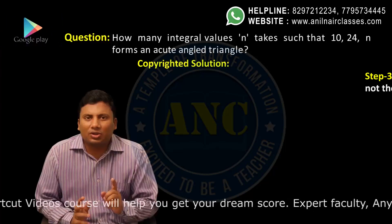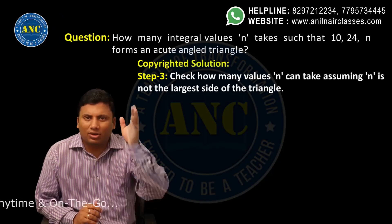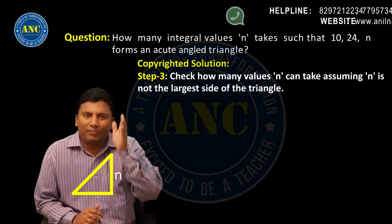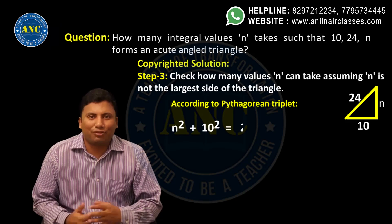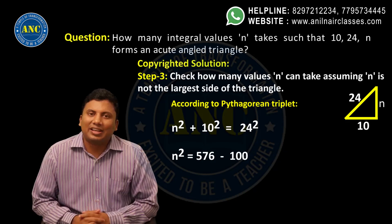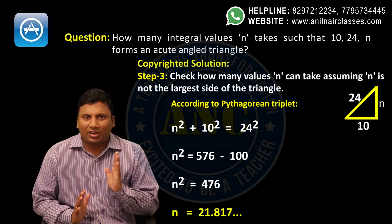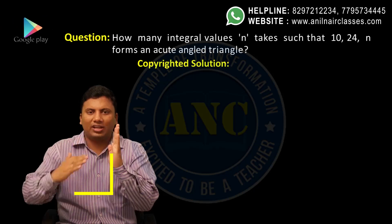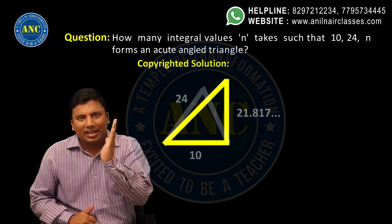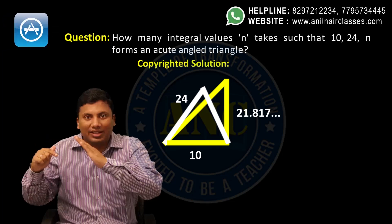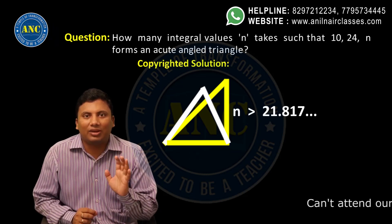Step 3: n is not the largest side — meaning 24 is the largest side. Treating n as the height opposite the largest side and applying the Pythagorean theorem: n² + 10² = 24², so n² = 576 − 100 = 476, giving n ≈ 21.something. For an acute-angled triangle the height value increases, so n must be greater than 21.something.